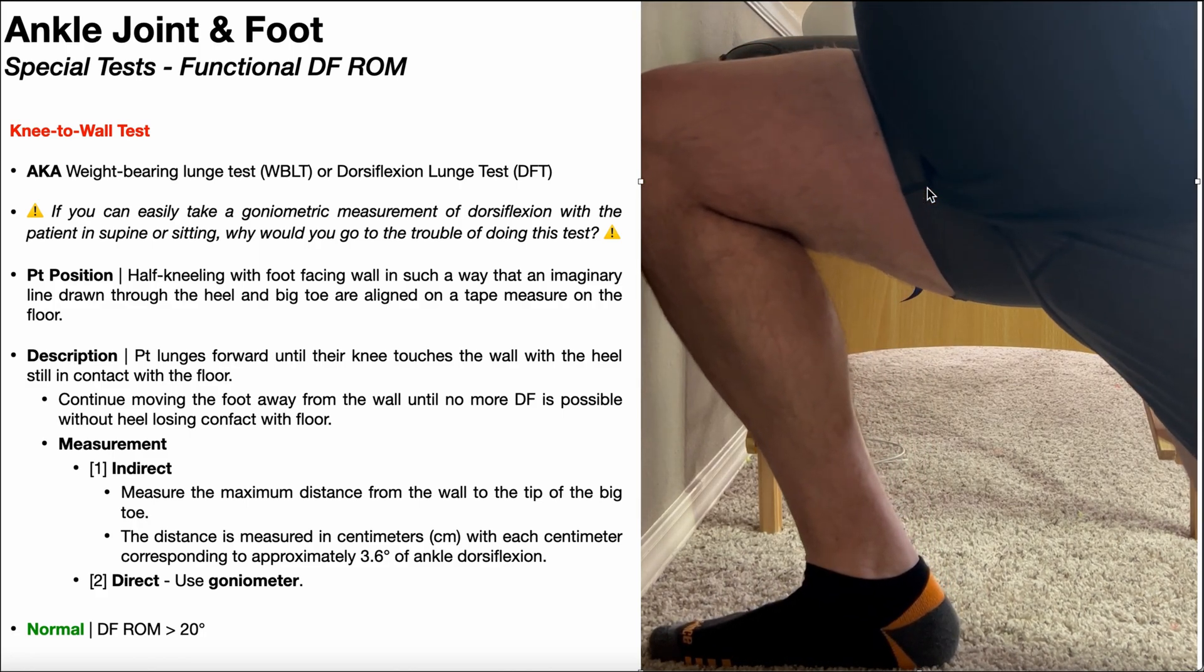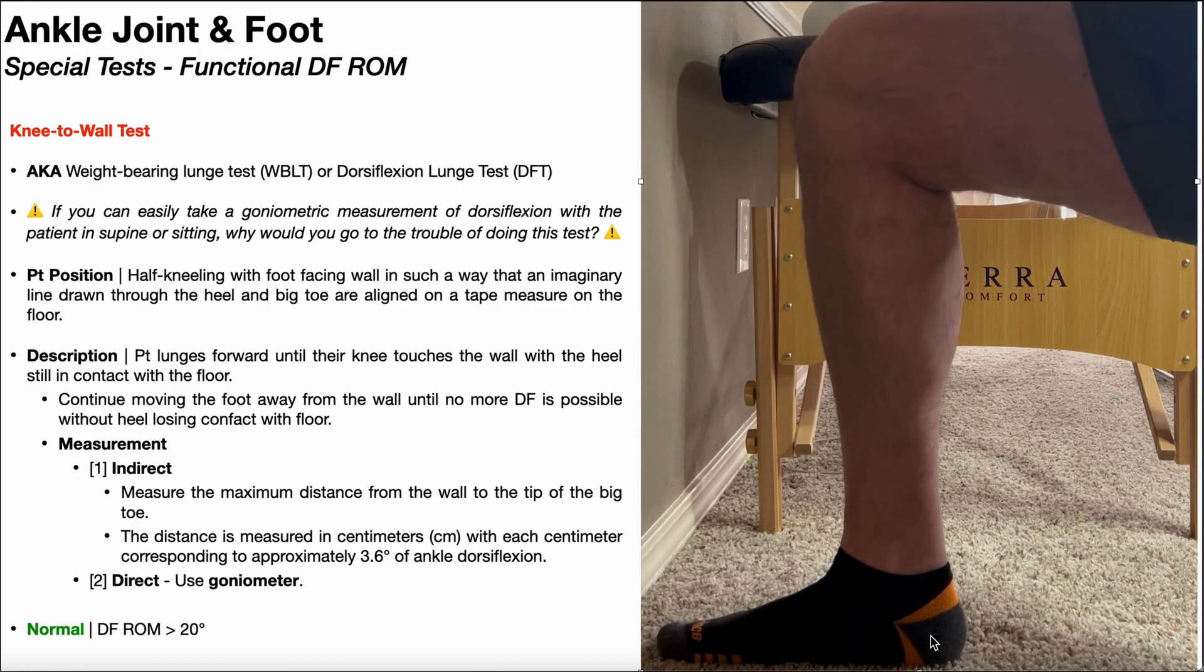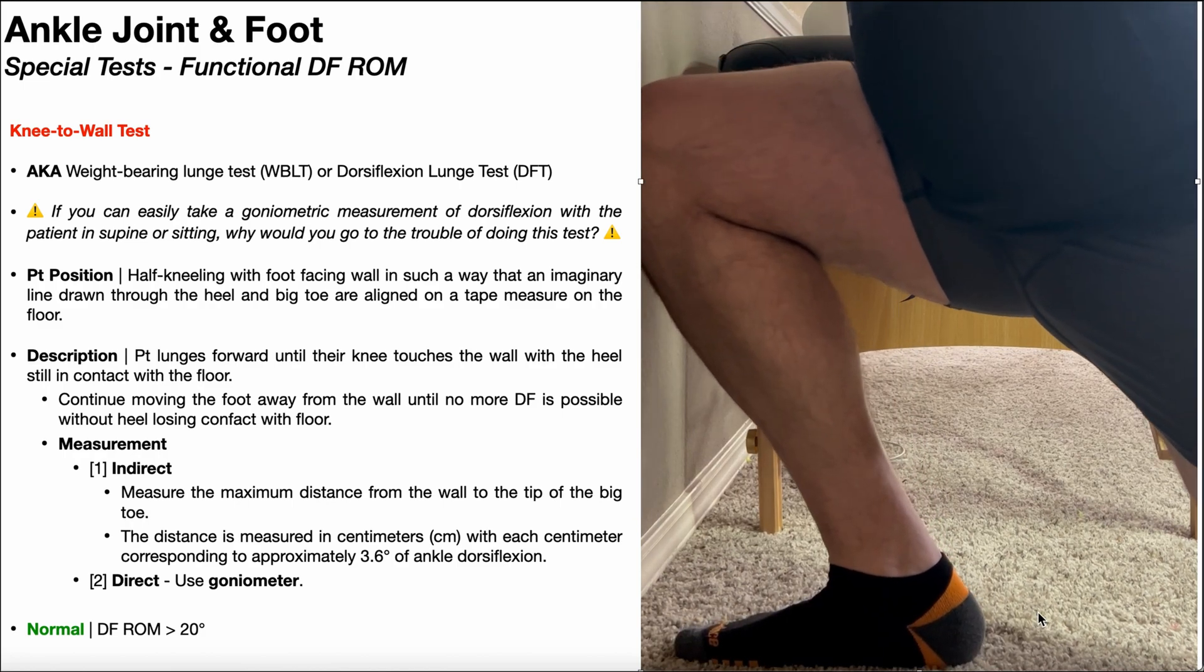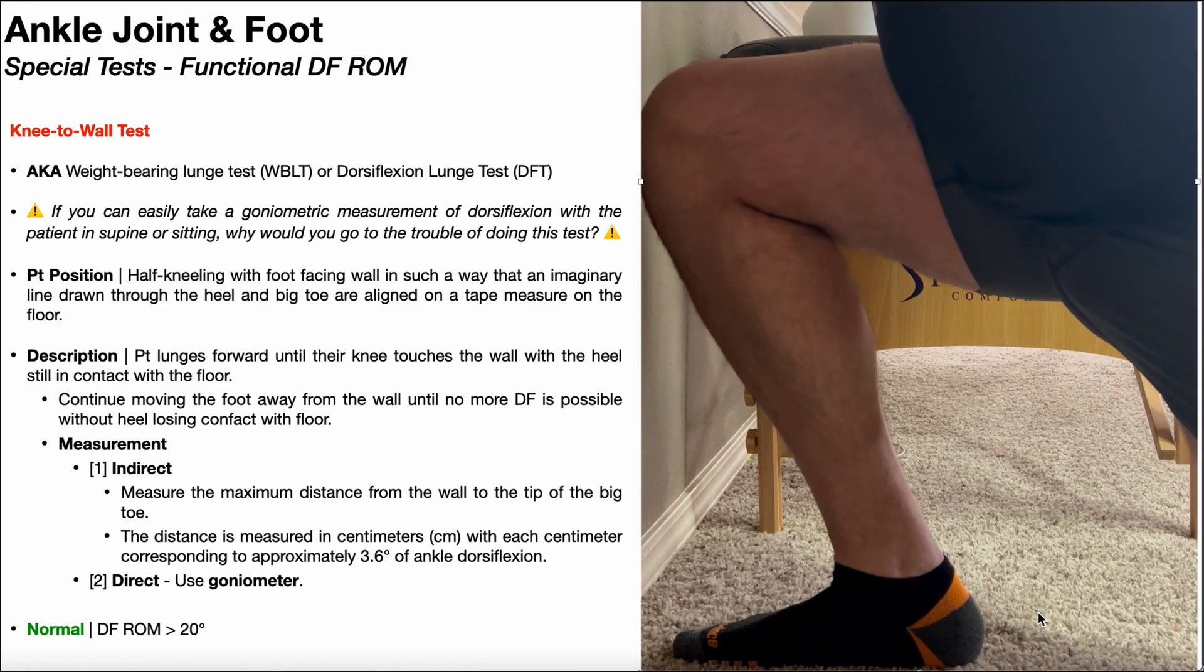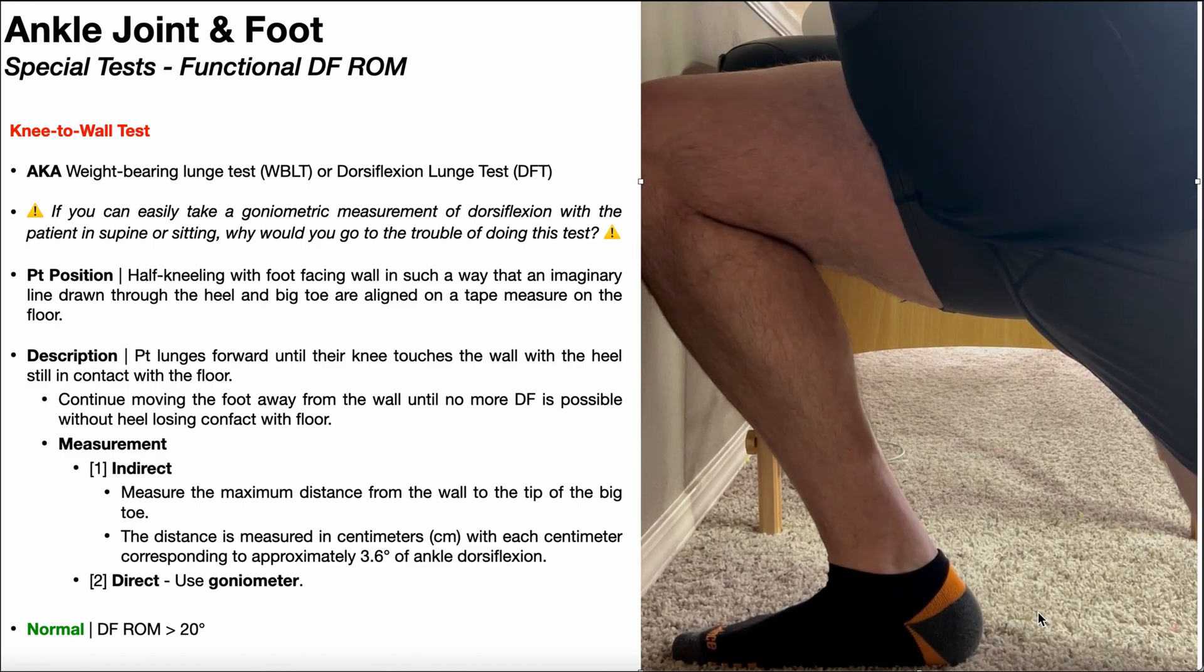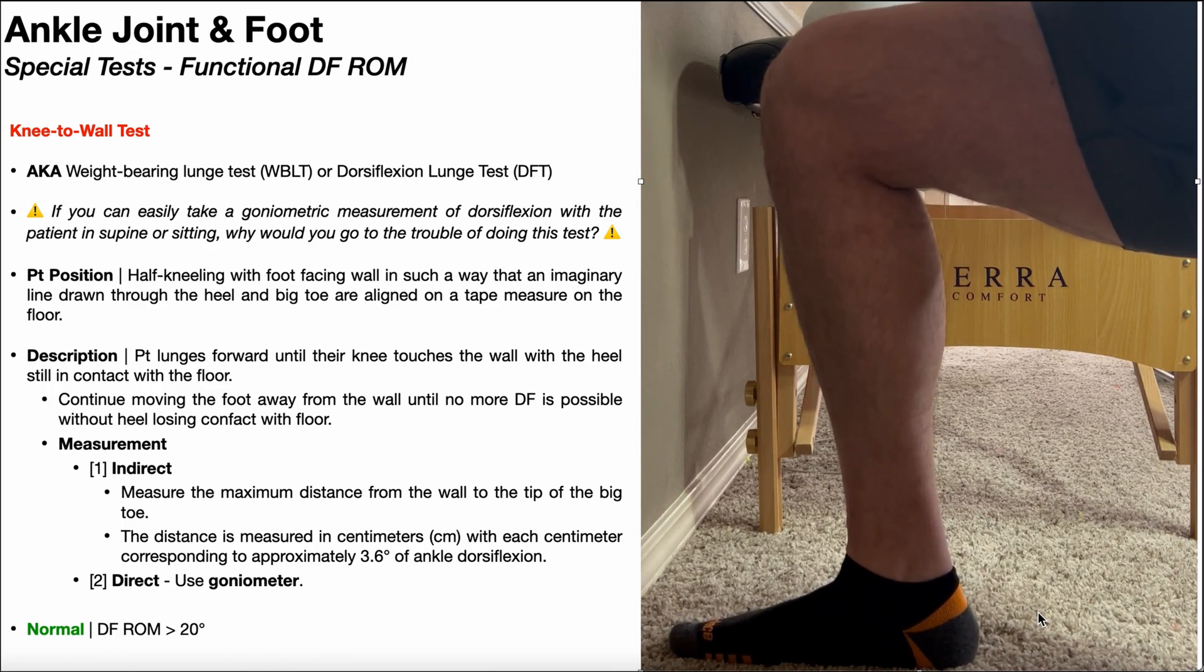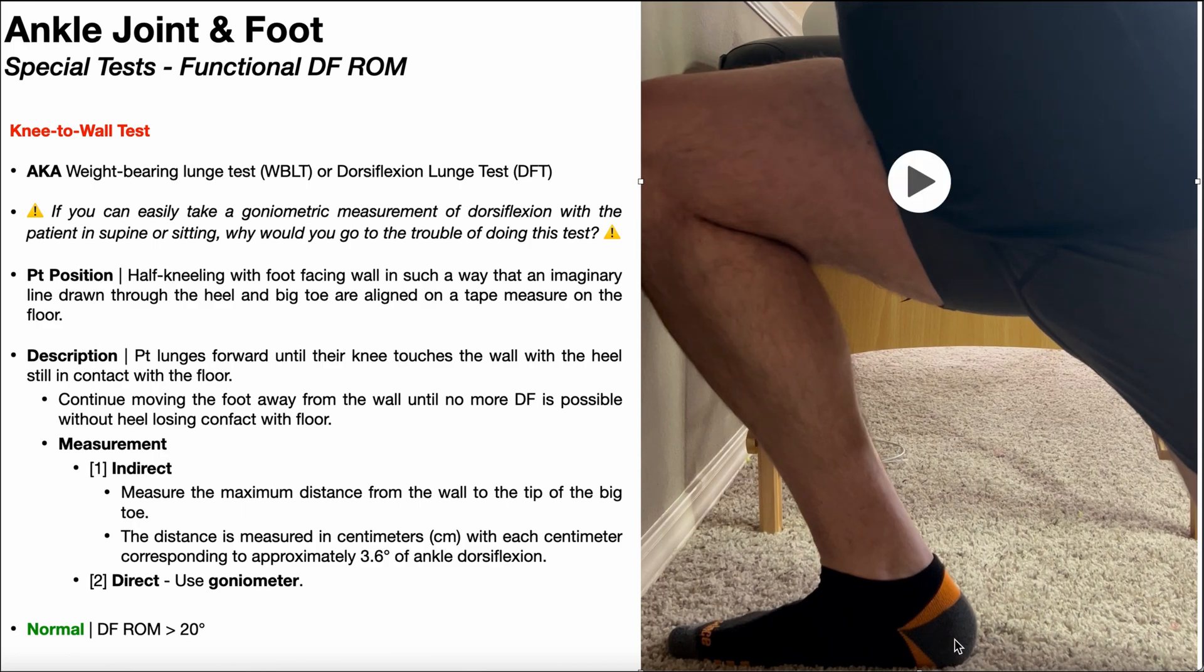Knee to the wall, closed chain dorsiflexion. That's fine right there. But then watch this. Watch my heel about right there. There it's starting to come off. So that's my limit right there. So I just need to back it in a little bit, my foot that is, and find the point where I can touch my knee to the wall and the heel's not coming off. And it's right there.